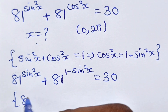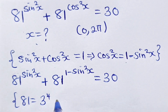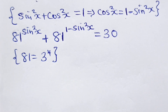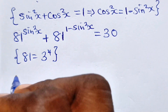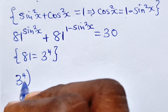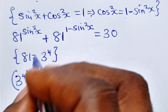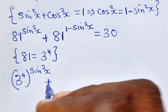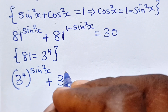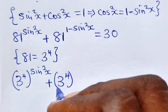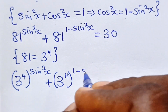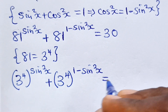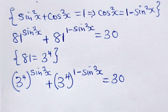Remember that 81 is 3 to the power of 4, so we can write this as 3 to the power of 4 raised to the power of sin²x, plus 3 to the power of 4 raised to the power of (1 − sin²x), is equal to 13.